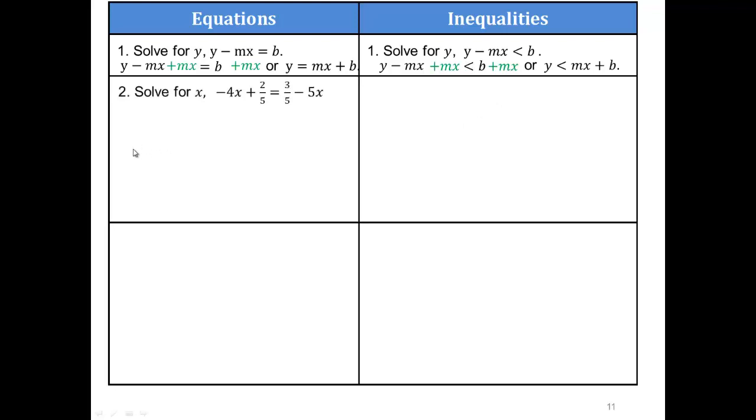Try that one on your own. What do you think we should do? Lots of stuff is happening here. Here we have negative 4x, and here we have negative 5x. Here we have 2 fifths, and we have 3 fifths. We want x by itself. So let's add 5x on both sides first. That will get rid of this negative 5x, because negative 5x plus 5x will be gone. So now we have negative 4x plus 5x is x plus 2 fifths equals 3 fifths.